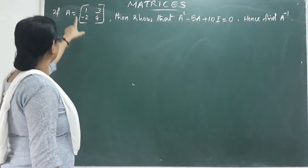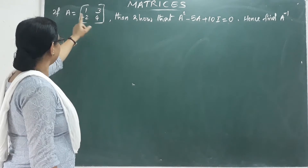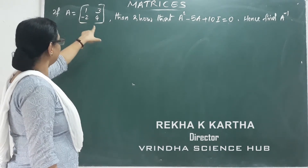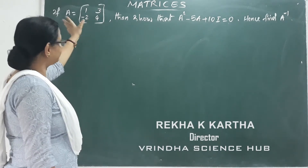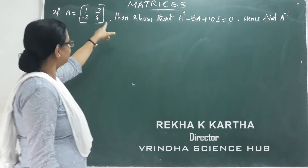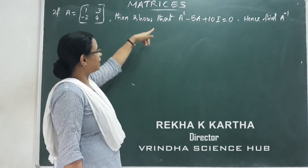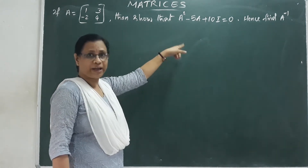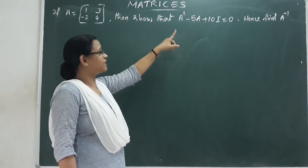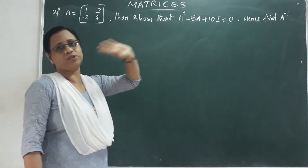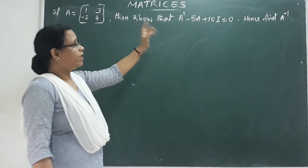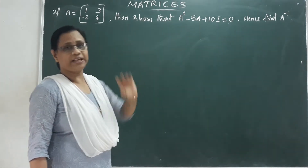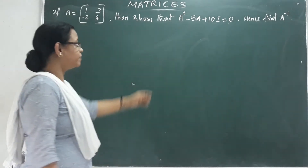If A equals the 2 by 2 matrix [[1, 3], [-2, 4]], then show that A squared minus 5A plus 10I equals zero. Hence, find A inverse.